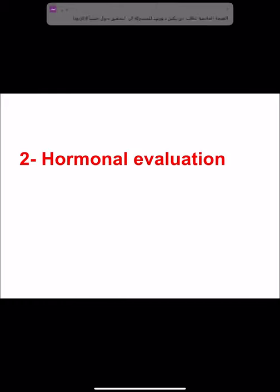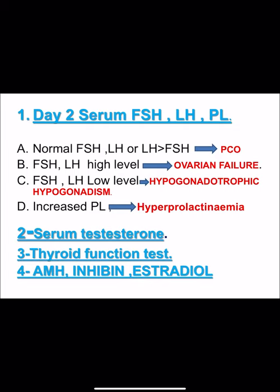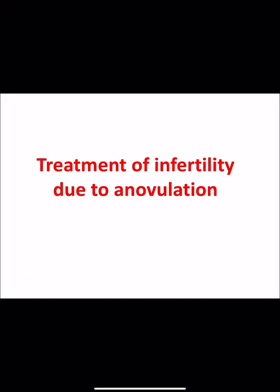If ovulation tests reveal abnormal ovulation, we perform hormonal evaluation including day 2 serum FSH, LH, and prolactin. Normal FSH/LH or LH greater than FSH indicates Group 2 (e.g., polycystic ovary); high FSH and LH indicates Group 3 (ovarian failure); low or undetectable FSH and LH indicates hypogonadotrophic hypogonadism (Group 1); and elevated prolactin indicates anovulation due to hyperprolactinemia. Other investigations may include serum testosterone, thyroid function tests, anti-Müllerian hormone for ovarian reserve, inhibin, and estradiol.